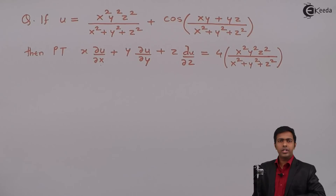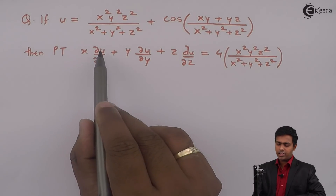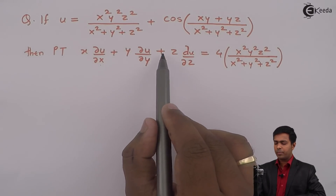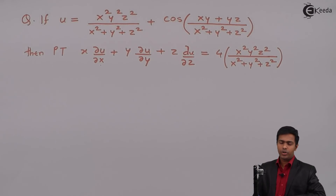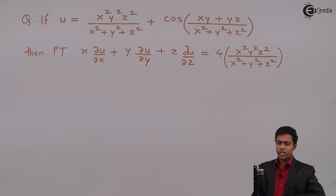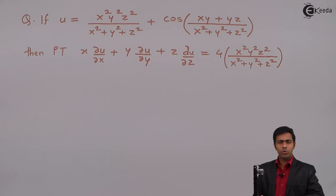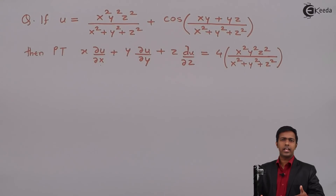According to Euler's theorem, the value of x∂u/∂x + y∂u/∂y + z∂u/∂z equals n·u, provided u is a homogeneous function. So first we will prove that u is a homogeneous function, and if it is, then by Euler's theorem we can get the answer in one line.